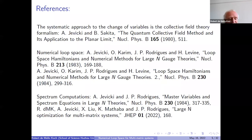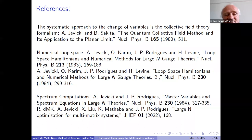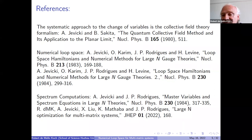So before we get started, let me give you some references. The systematic approach to a change of variables is known as collective field theory. It was developed in 1980 by Jevicki and Sakita. This particular approach to the numerics of multi-matrix models was outlined and implemented in two papers by Jevicki, Karim, Rodrigues and Levine in 1983 and 1984. So we're revisiting an old method. Of course, this original work was done 40 years ago and computers have improved a lot in the last 40 years. Part of the motivation was to see how much further we can go using modern computers. The spectrum computations were also considered in 1984 by Jevicki and Rodrigues. We will make some small improvements, but it's essentially what Jevicki and Rodrigues did.